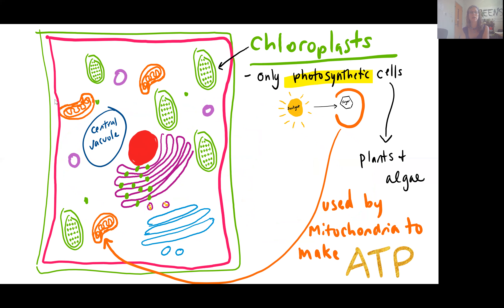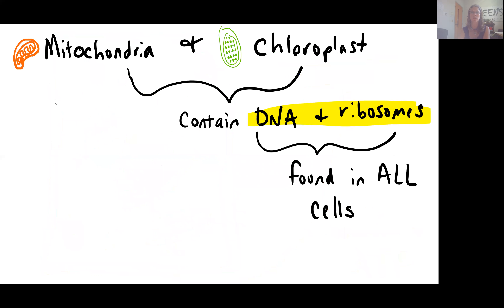Remember that plant cells have both chloroplasts and mitochondria. When we say that the cell is using sunlight to make sugar, that sugar goes to the mitochondria for the process of aerobic respiration, which is how we make our ATP molecules. That process is the same whether it's a plant or an animal cell.